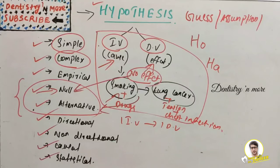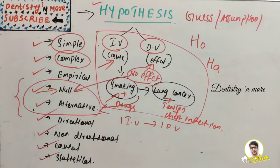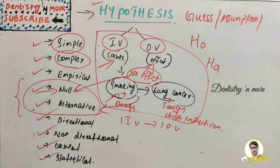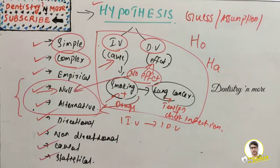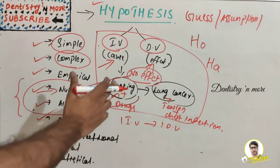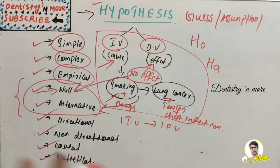Empirical hypothesis means it is based on evidence. If we have evidence to say that smoking causes lung cancer, that type of hypothesis is known as empirical. Sometimes we won't have evidence — such as during the COVID-19 pandemic, there wasn't much evidence initially. But for smoking and lung cancer, there are many cohort studies that have already proven the relationship. So if a hypothesis is supported by existing evidence, it becomes an empirical hypothesis.